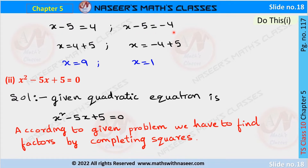So x - 5 = 4 and x - 5 = -4. Transposing -5 to the RHS: x = 4 + 5 = 9, and x = -4 + 5 = 1. Therefore the solutions to the first problem are x = 9 and x = 1.